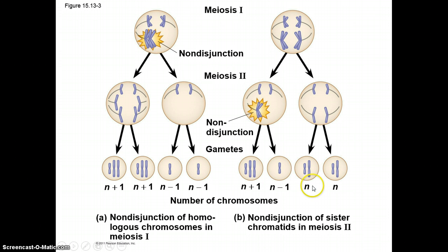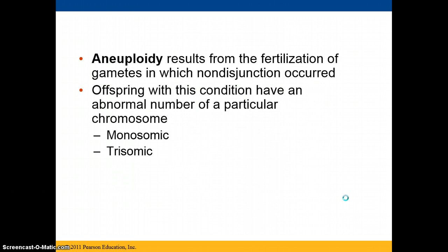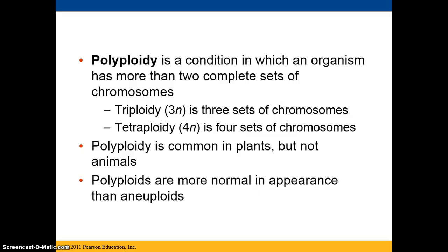The two gametes on the right-hand side represent what a normal gamete would look like, with two chromosomes each. Aneuploidy results from the fertilization of gametes in which non-disjunction has occurred — it is a deviation from the normal. You can be monosomic, meaning having only one chromosome at the locus, or trisomic, meaning having three chromosomes at that particular chromosome number when the gametes recombine.